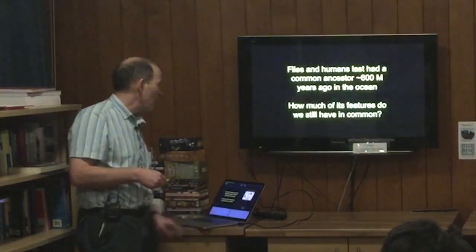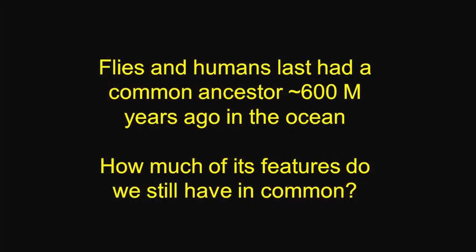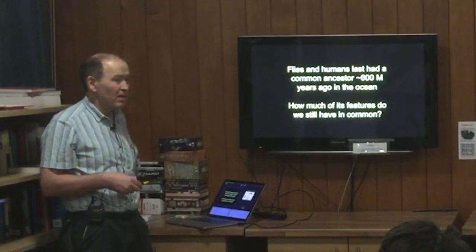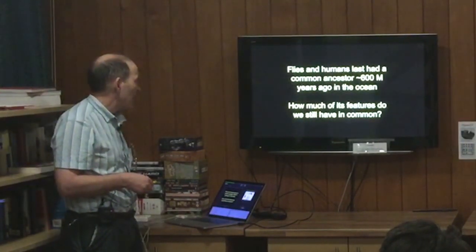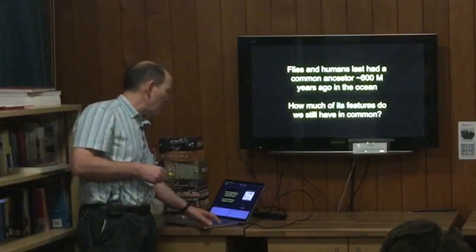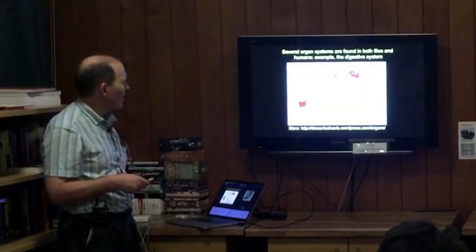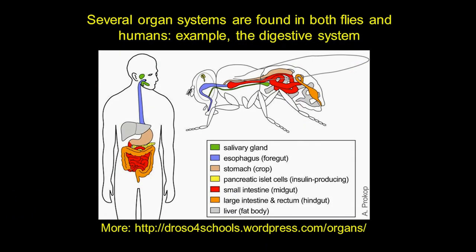So how useful are they? Flies and humans last shared a common ancestor probably around 600 million years ago, at a time when it must have been in the ocean. How much of their features do we still have in common? One example of an organ system found in both flies and humans is the digestive system — we've both got salivary glands, an esophagus, a stomach, an intestine, and a few other bits and pieces as well.